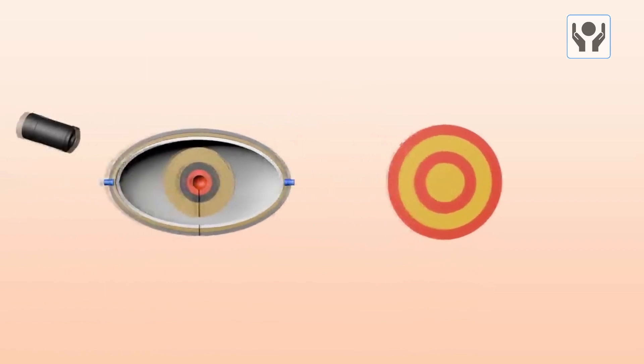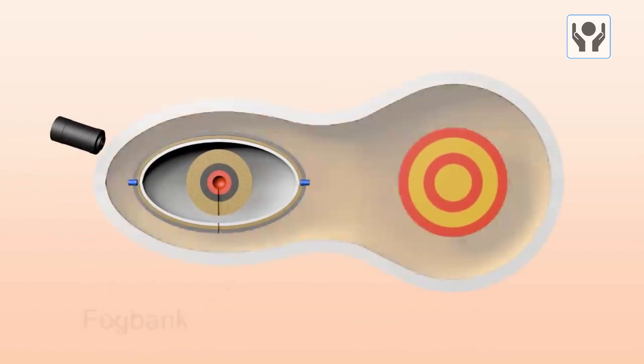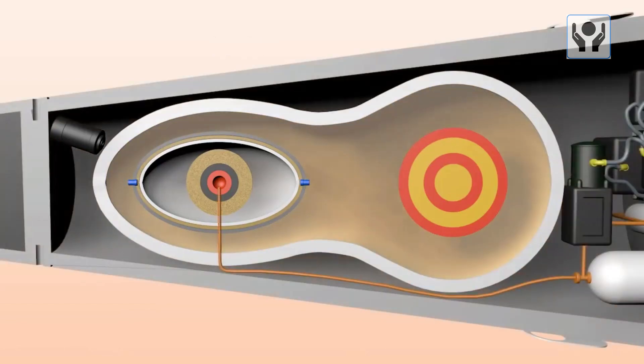The secondary stage, which is surrounded by a radiation case, contains a mixture of thermonuclear fuel, such as deuterium and tritium, and a pusher material, such as beryllium, which is used to compress the fuel and initiate the fusion reaction.